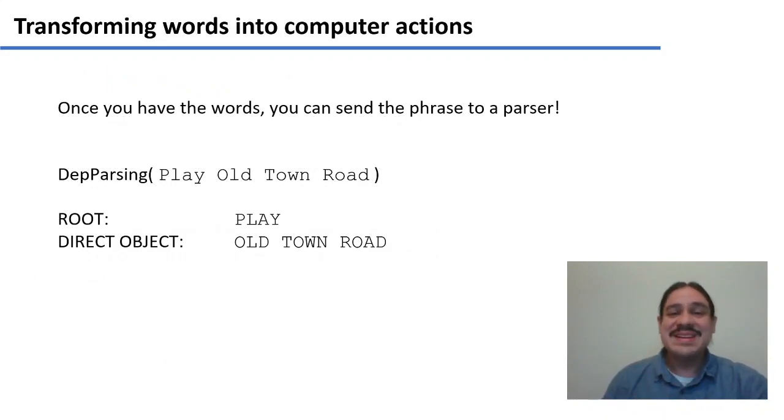Once you have the words, you can send that to a parser, for example. So if you have Siri and you tell Siri, 'play Old Town Road,' the computer will recognize the words, send them to a dependency parser, and hopefully you'll determine that the root of that sentence is play, and the direct object is Old Town Road. That is what we're trying to get.